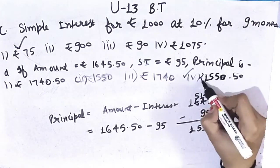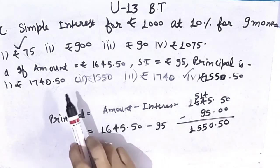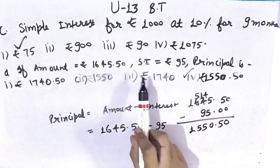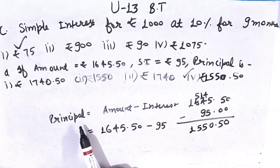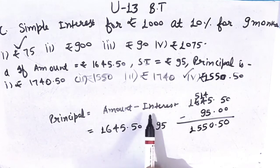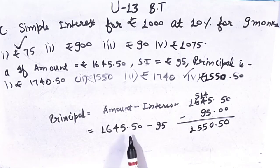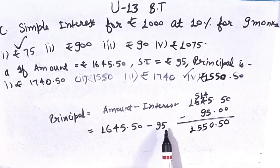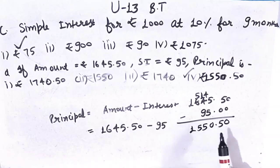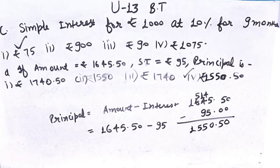Is it clear? What was given? Amount was given, simple interest was given. So the formula for finding principal is amount minus simple interest. Amount is Rs.1,645 and 50 paise, and simple interest is Rs.95. After cancellation, principal comes out to Rs.1,550 and 50 paise.